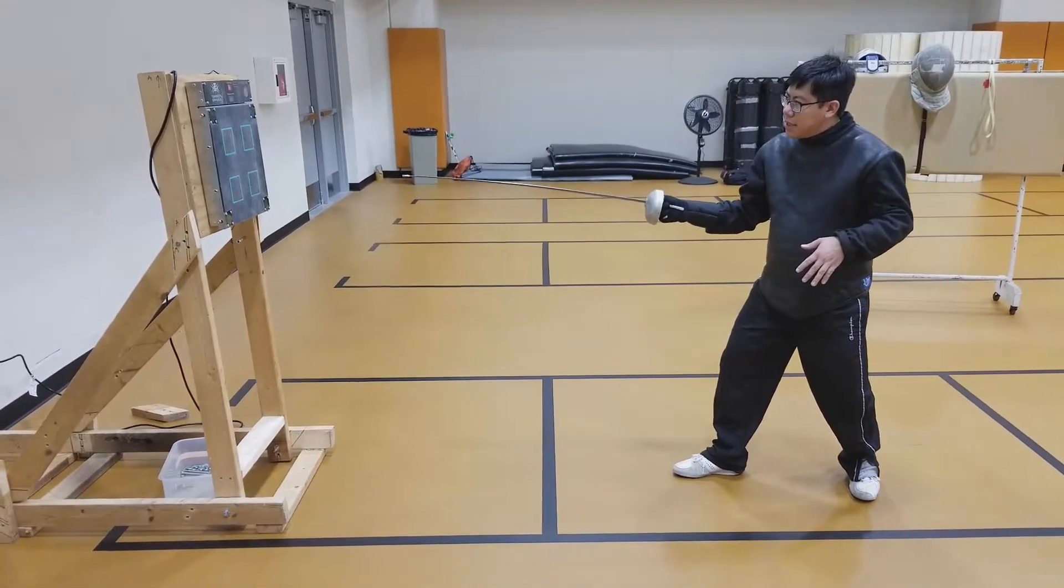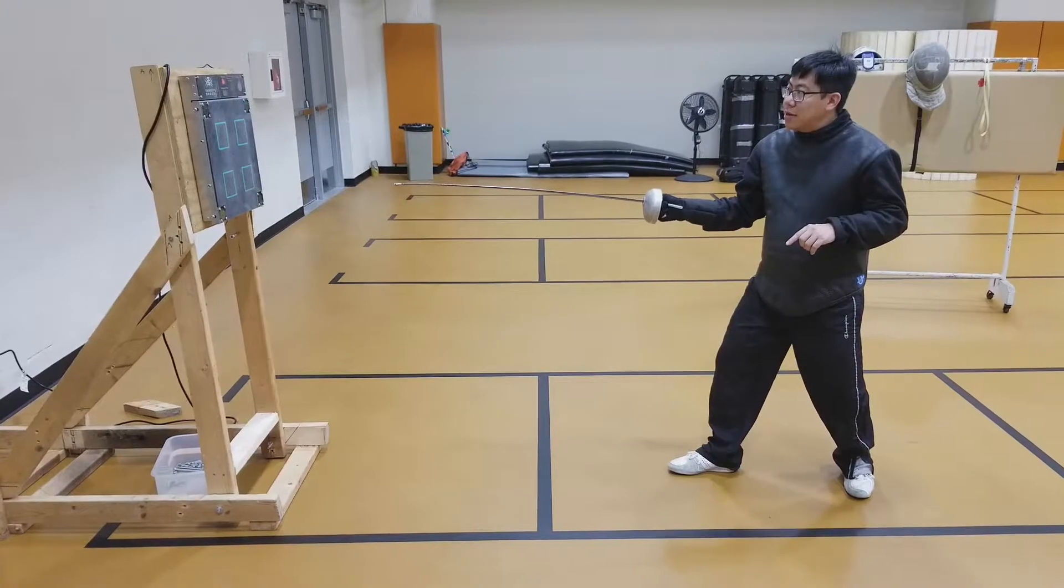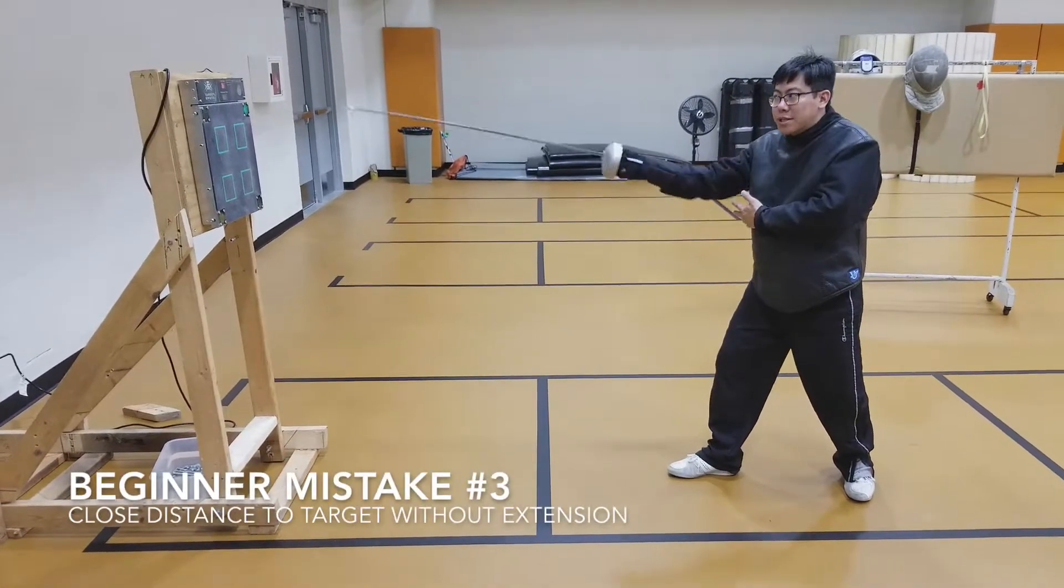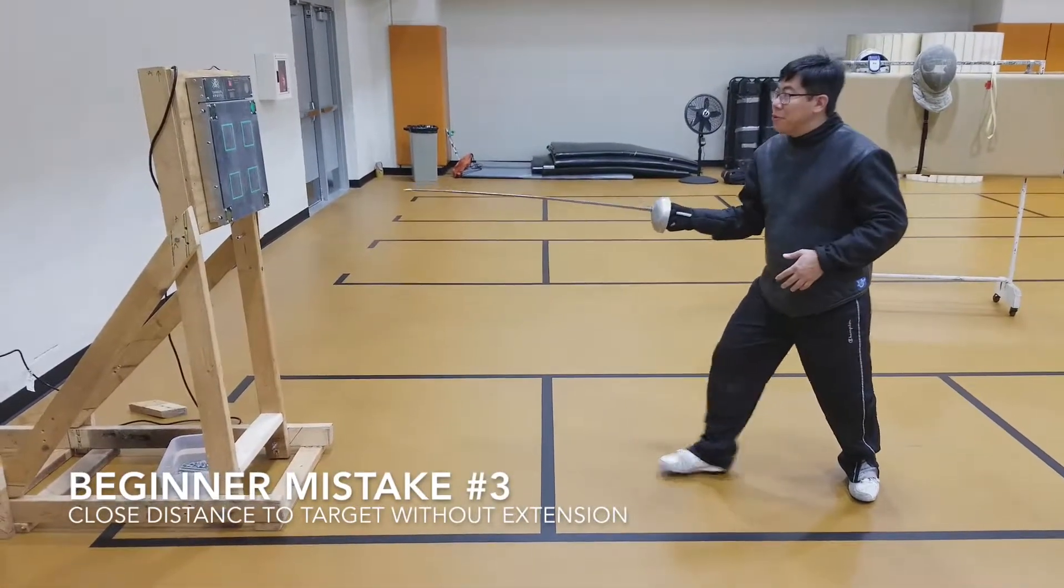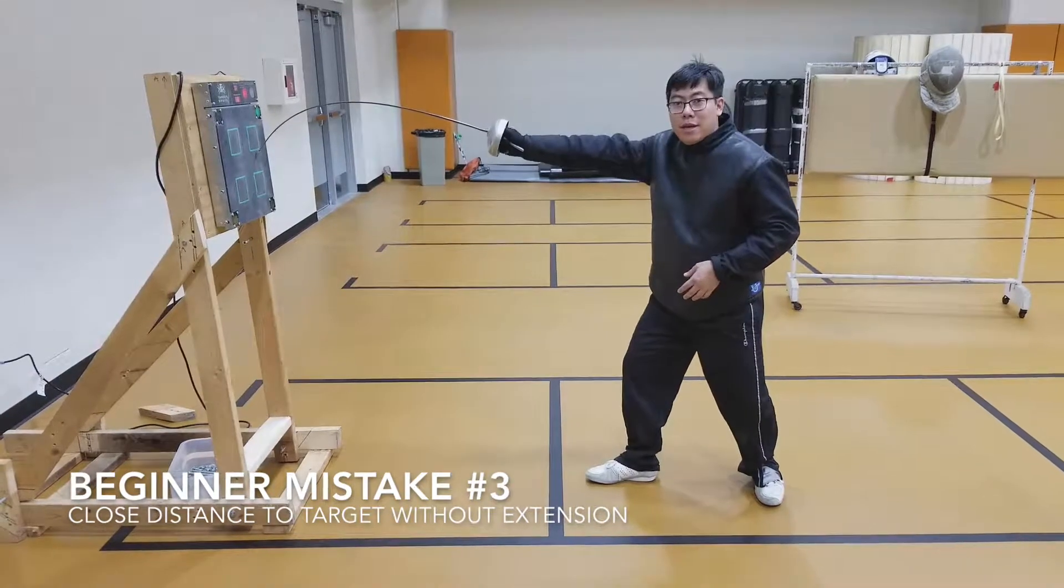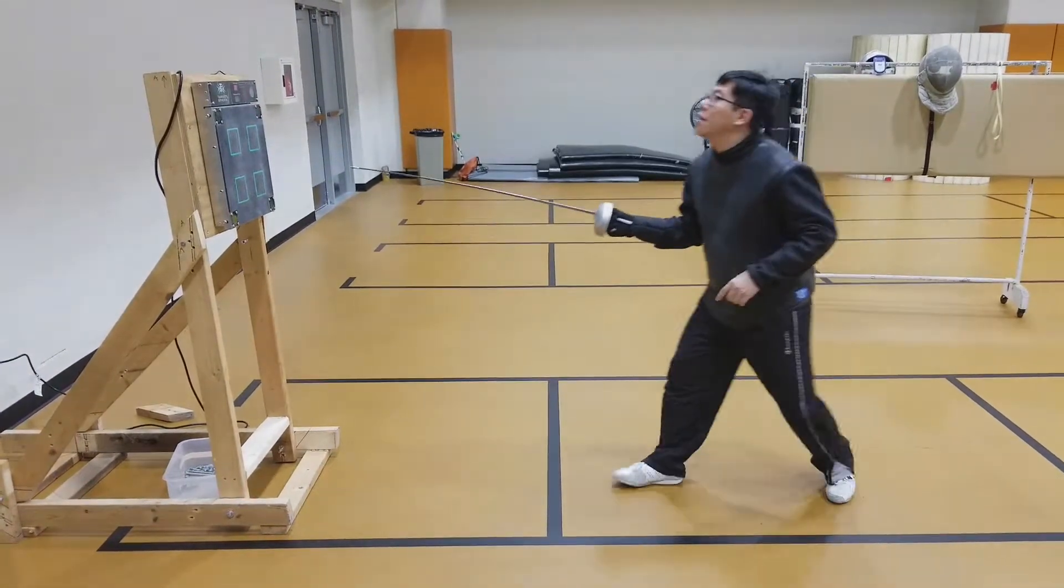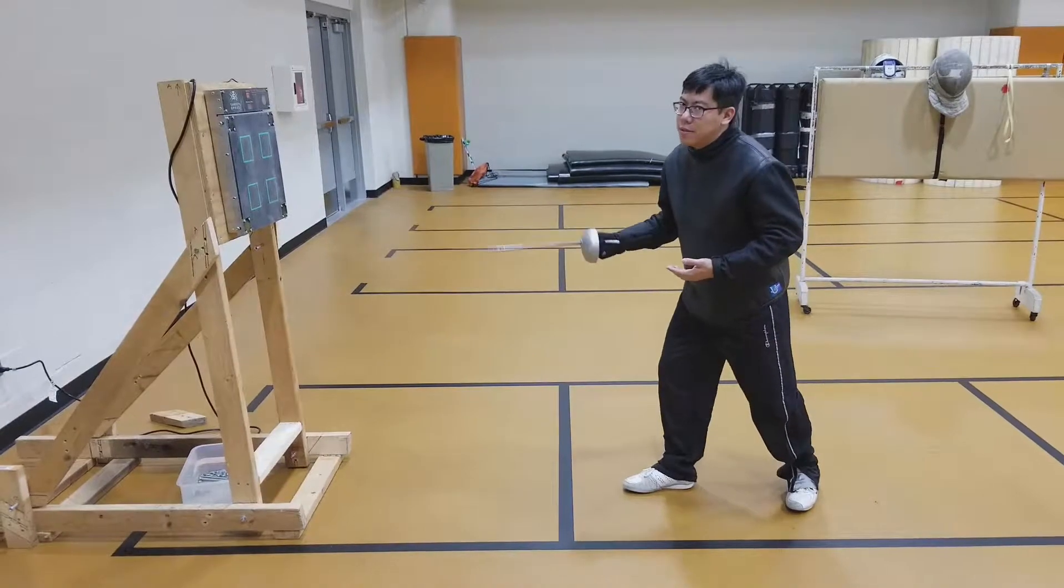One thing that you may see that's incorrect is that they're going to want to advance before extending their target, extending their arm. They'll do this and then attempt to make the attack from extension distance. That's not what I want because that means that they're coming in, exposing the target, and then attempting to hit.